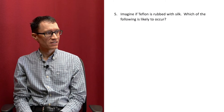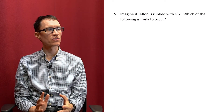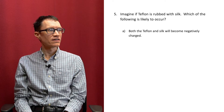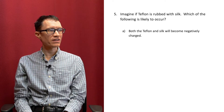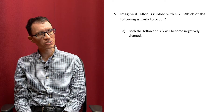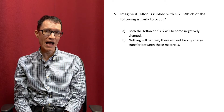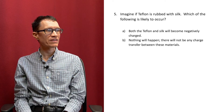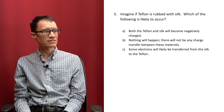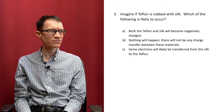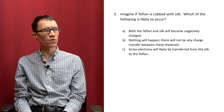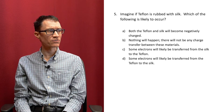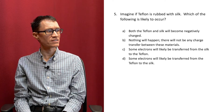Question 5: Imagine if Teflon is rubbed with silk. Which of the following is likely to occur? A: Both the Teflon and silk will become negatively charged. B: Nothing will happen — there will not be any charge transfer between these materials. C: Some electrons will likely be transferred from the silk to the Teflon. Or D: Some electrons will likely be transferred from the Teflon to the silk.